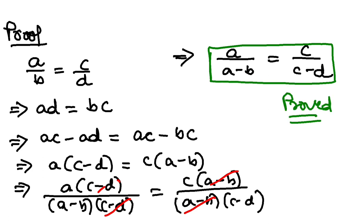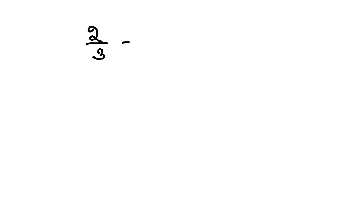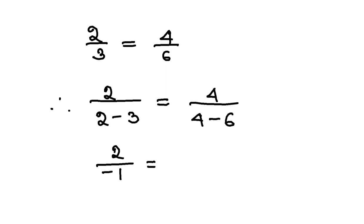Now let us understand this with the help of an example. Suppose you have 2/3 = 4/6. Applying convertendo, a/(a - b) gives 2/(2 - 3), and c/(c - d) gives 4/(4 - 6). That is 2/(-1) = 4/(-2).